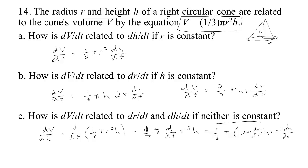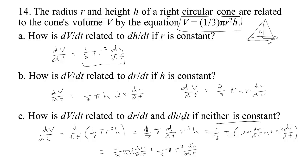We take the derivative of the first factor, which gives 2r · dr/dt, times the second factor h, plus the first factor r² times the derivative of the second, which is dh/dt. Distributing and collecting terms: dV/dt = (2/3)πr · h · dr/dt + (1/3)πr² · dh/dt. Notice that if r is constant so dr/dt = 0, the first term vanishes and we recover our earlier result. Or if dh/dt = 0 because h is constant, we get (2/3)πrh · dr/dt, which is what we got before.